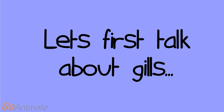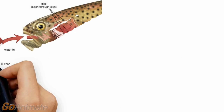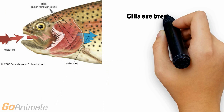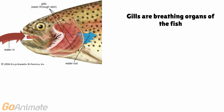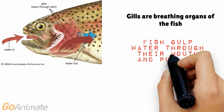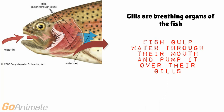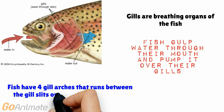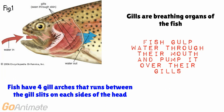Let's first talk about gills. Gills are the breathing organs of the fish, just like the lungs in humans. They are the site where gas and ion exchange occur. The gills are also permeable to respiratory gases and ammonia waste products. The fish gulp water through their mouth and pump it over their gills.